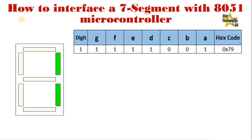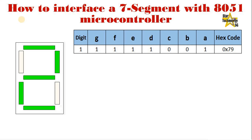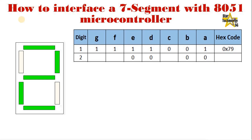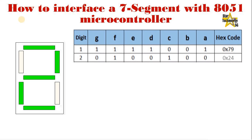If we need to display digit 2, then we need to turn on segment A, segment B, segment D, segment E, and segment G, and turn off the remaining segments. The hex code of this binary value is 24.